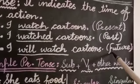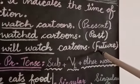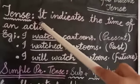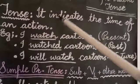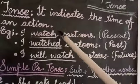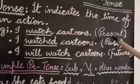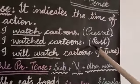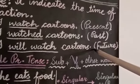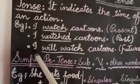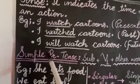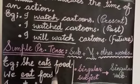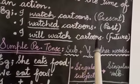So, tense shows the time of an action — whether it has taken place in present time, has already taken place in past time, or will take place in future. Now let's start the main topic: simple present tense. All of you might have flown a kite at some point in your lives.